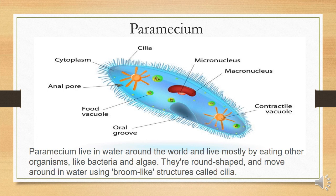The paramecium single cell consists of a micronucleus, macronucleus, contractile vacuole, oral groove, food vacuole, anal pore, and cytoplasm. Cilia helps the paramecium to move in the water.